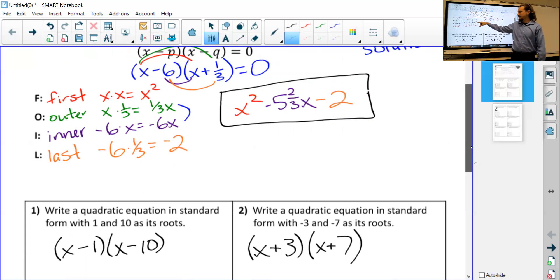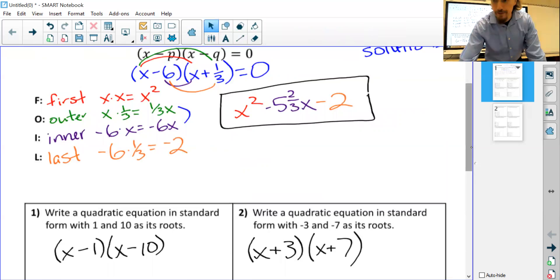Combine your outer and inner terms. They should both have an X at the end. Put your first term to the left. Put your last term to the right. Easy stuff. Okay. If you got questions, let me know. Where's that dang button?